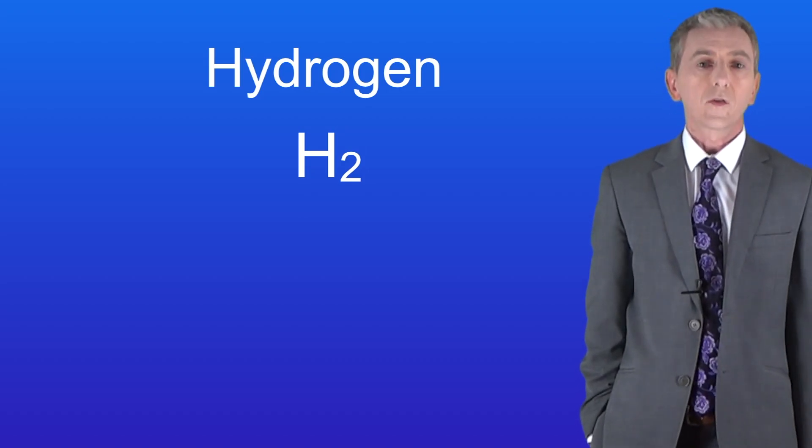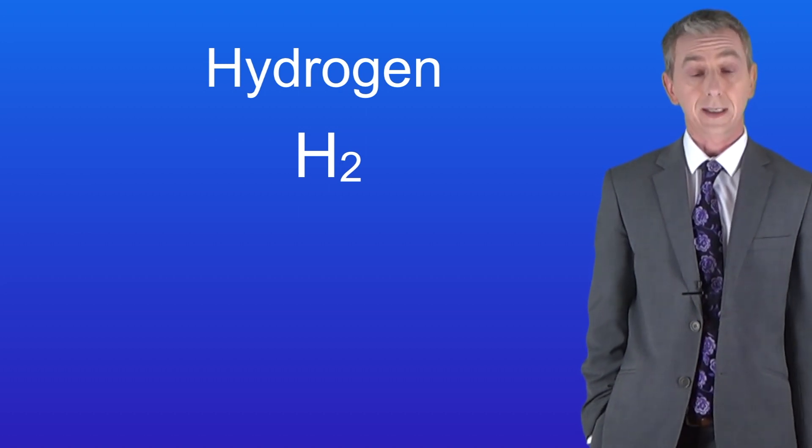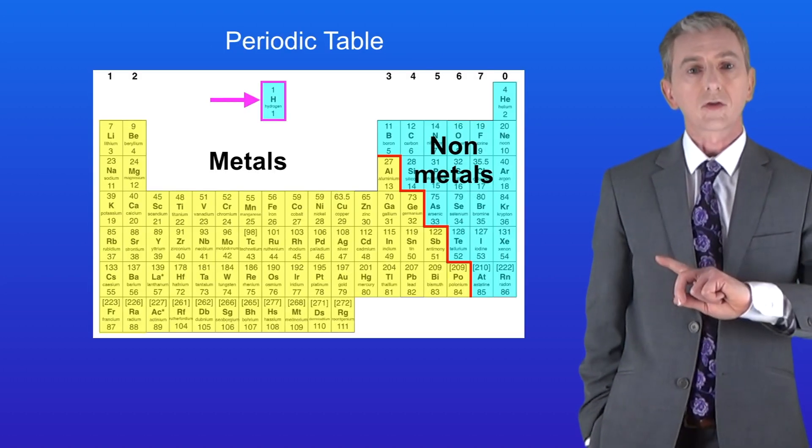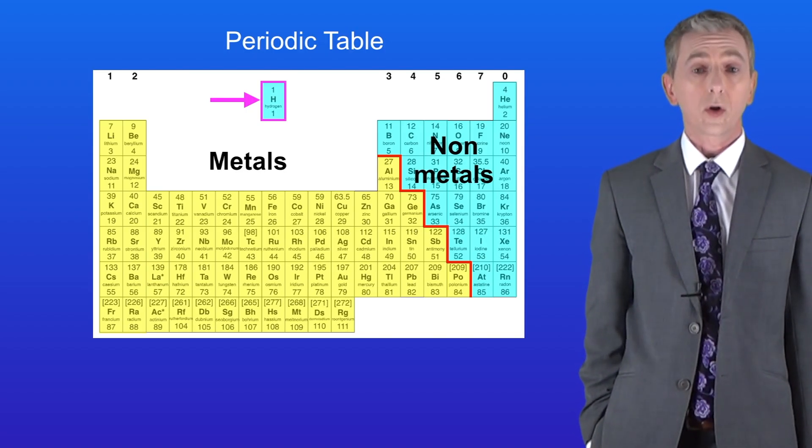So what does this formula tell us? Well it tells us that we have two hydrogen atoms bonded together. Here's hydrogen on the periodic table and we can see that hydrogen is a nonmetal element.